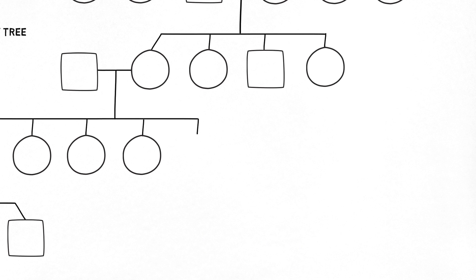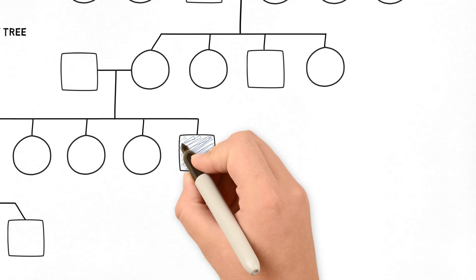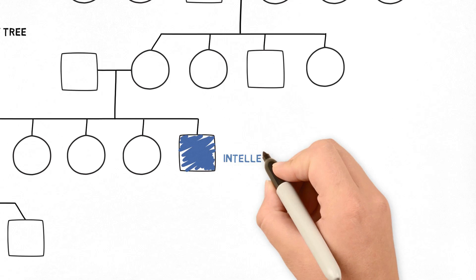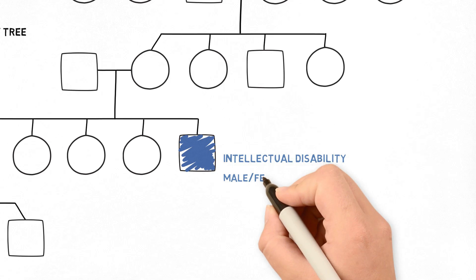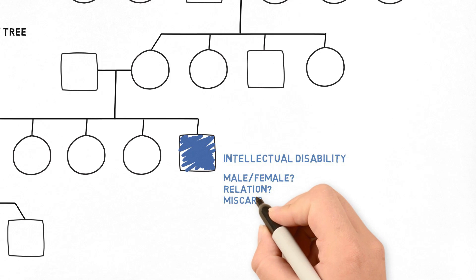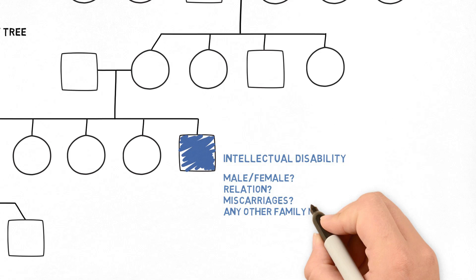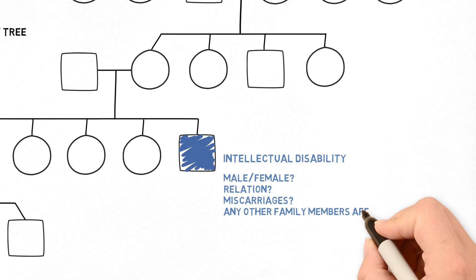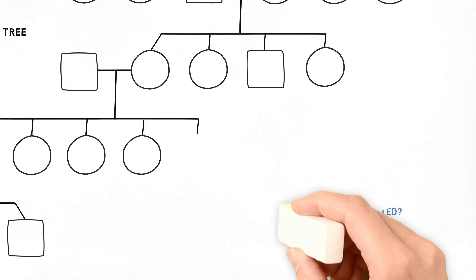In this next step, we have the same family tree, but your patient has come to you because she's worried that her brother has intellectual disability. You need to find out whether the affected individual is a male or female, and how your patient is related to the affected individual. Was there a history of miscarriages in herself or in her mother's generation? This might suggest that the family is at risk of a chromosomal translocation. You also need to ask whether anyone else in the family has intellectual disability, and remember to check through the female line for additional affected males.